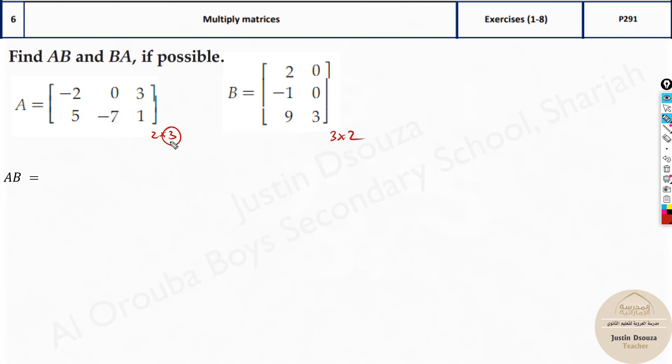If the columns in the first matrix is equal to the number of rows in the second matrix then we can easily multiply them. If they are not equal then we cannot.